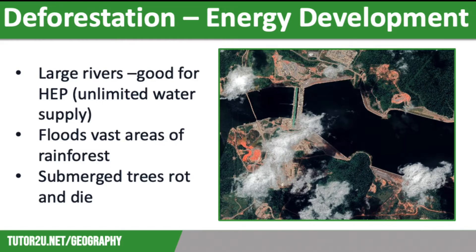In addition, the rainforest is also being deforested to make way for energy development. Rainforests often have large rivers running through them, such as the Amazon River, and this unlimited water supply means there is a huge potential for hydroelectric power. The development of new energy sources is really important for economic development in newly emerging economies such as Brazil. However, building hydroelectric dams involves flooding vast areas of the rainforest, meaning that thousands of trees are submerged underwater, leading them to rot and die. The dams can also become silted up and blocked with soil that has been washed off exposed slopes by heavy rainfall.